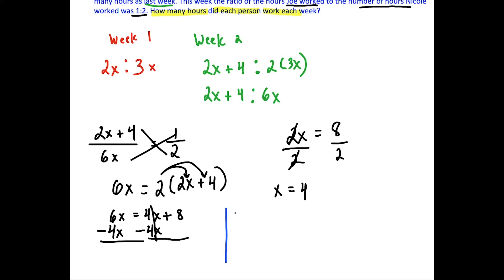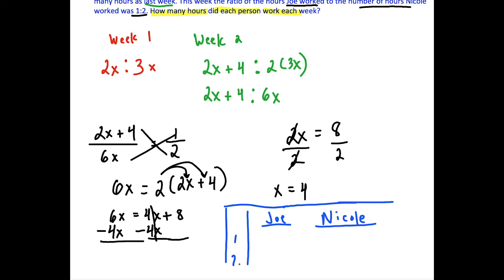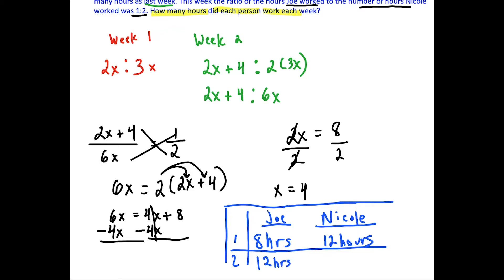We'll plug x back in for our final answer. For week one: Joe worked 2 times 4, which is 8 hours, and Nicole worked 3 times 4, which is 12 hours. For week two, Joe worked 4 more hours, so Joe worked 12 hours. Nicole doubled her hours from 12 to 24 hours.